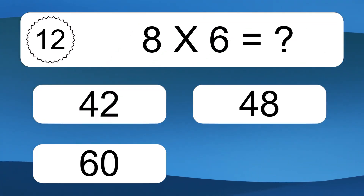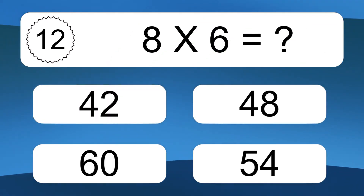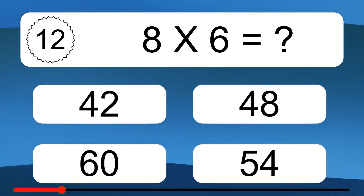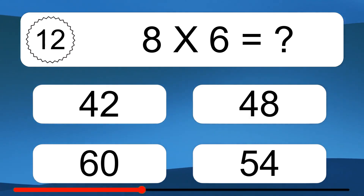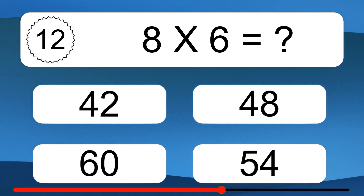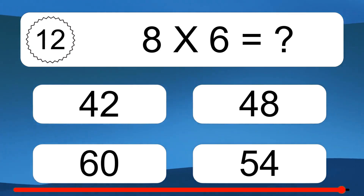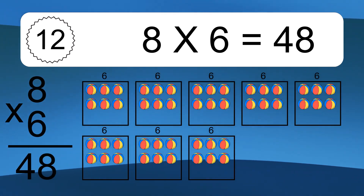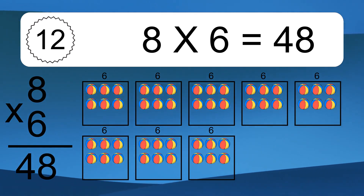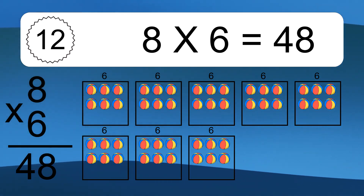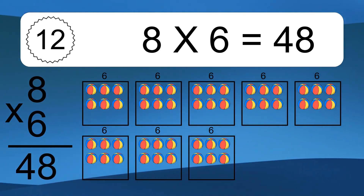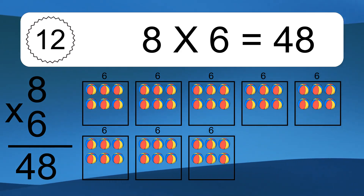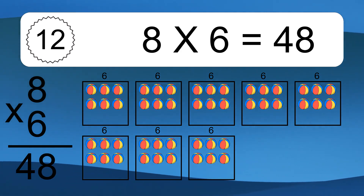8 times 6 equals what? 8 times 6 equals 48. We have 8 boxes and each box has 6 colorful balls inside. If you count all the balls in all the boxes together, you will have 8 times 6 balls. This equals 48 balls.